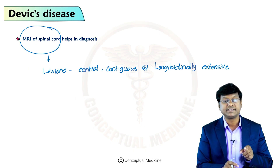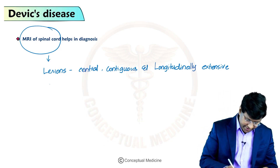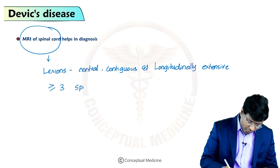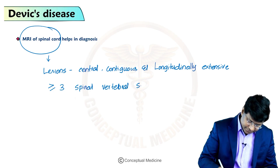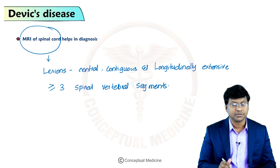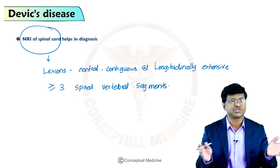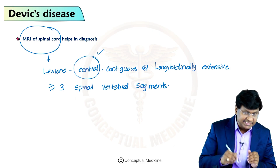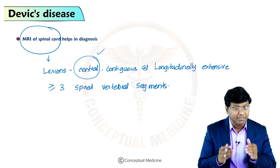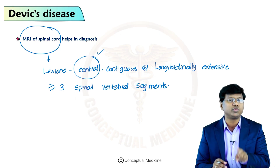At minimum, there is involvement of more than three spinal vertebral segments. In contrast, in multiple sclerosis, the spinal cord involvement is peripheral and restricted. In neuromyelitis optica the involvement is central, while in multiple sclerosis it is peripheral and restricted to only one or two vertebral segments.